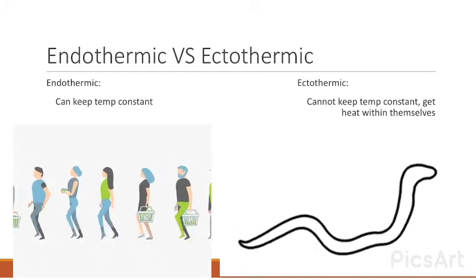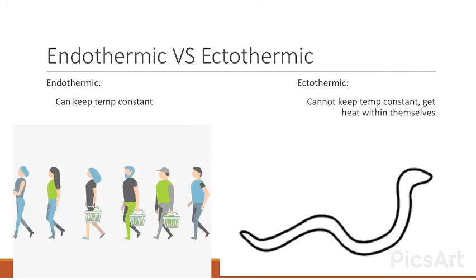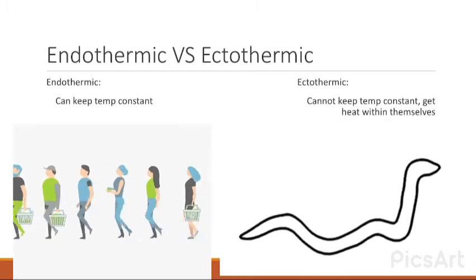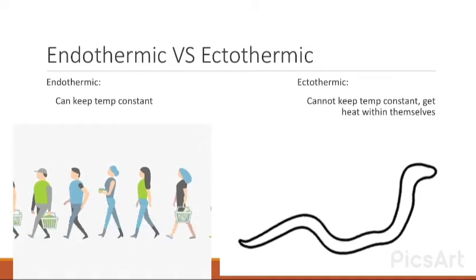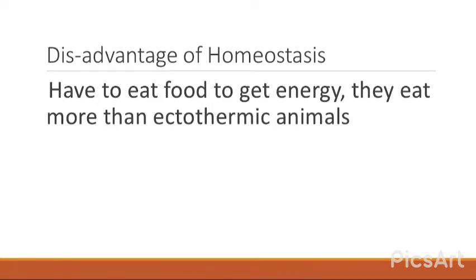Endothermic versus ectothermic: endothermic means organisms are able to keep temperatures constant, whereas ectothermic means they cannot keep temperatures constant — an example is a snake. The advantage of being endothermic is that metabolic processes can take place at any external temperature. The disadvantage is you have to eat more food to get energy, so ectothermic animals eat less food.